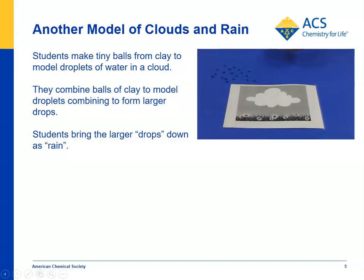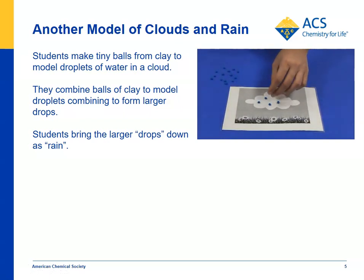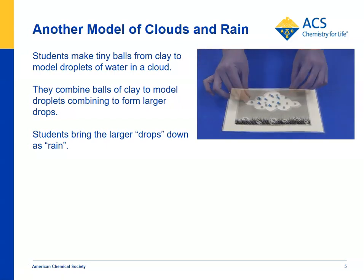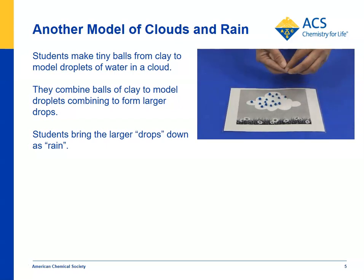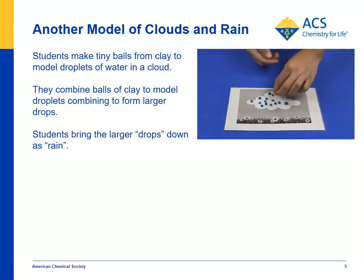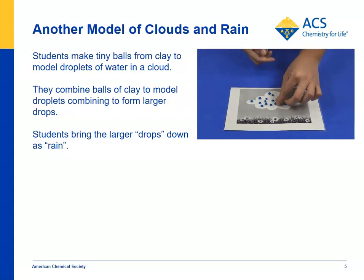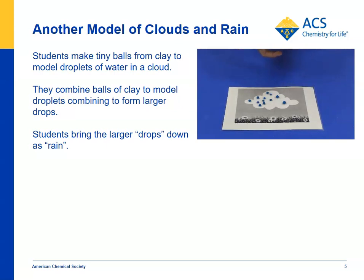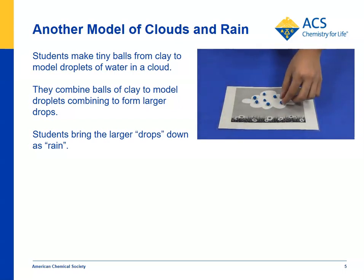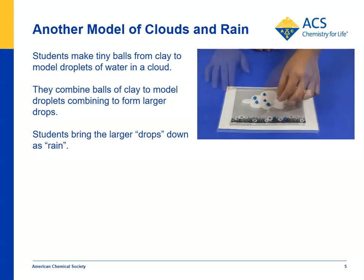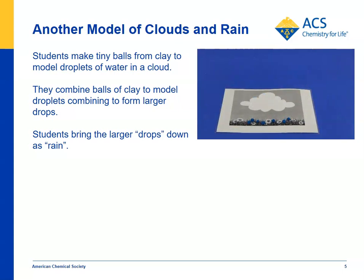In the extend part of the lesson, students make another model. They take clay and form it into very tiny little clay balls and put them in the cloud as if those are the tiny little particles of water. The idea is that when there's enough tiny little water droplets in the cloud and it's cold enough, they come together and make larger drops. Eventually those drops will be big enough and heavy enough to fall as rain, and kids can show that by taking the bigger drop and bringing it down to the ground — good for the flowers, grass, and any animals that might come along.